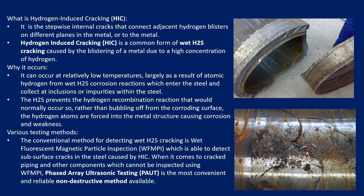Hydrogen induced cracking mostly occurs at low temperatures, largely as a result of atomic hydrogen from wet H2S corrosion reactions. This atomic hydrogen is forced to enter into the steel and collects at the inclusions or impurities within the steel. When this atomic hydrogen enters into the steel, it causes cracks — these are called hydrogen induced cracking. H2S prevents hydrogen recombination, which is the basic reason why it occurs.